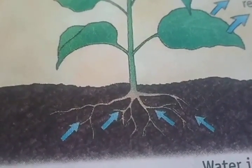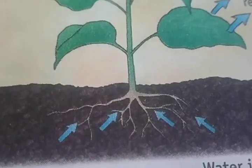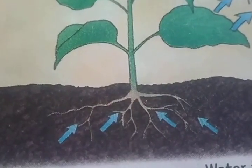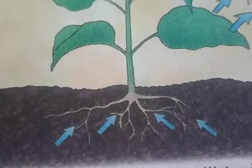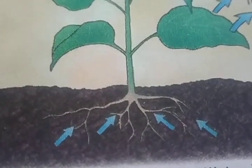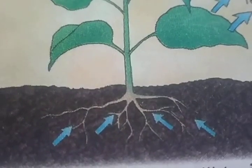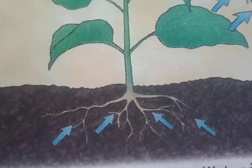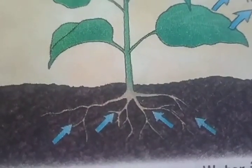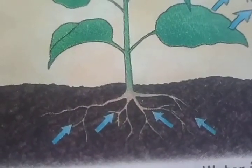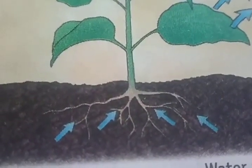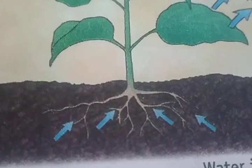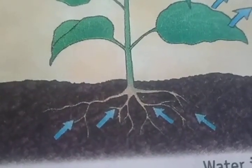Soil is the loose material formed on the surface of the earth. It is made of organic and inorganic particles. The organic particles are derived from dead remains of plants and animals. After a very long period, these particles get decomposed and changed into a dark colored material called humus. The humus present in the soil contributes to the fertility of the land.